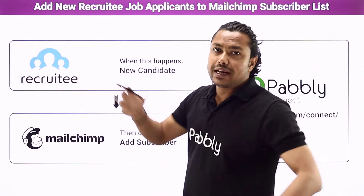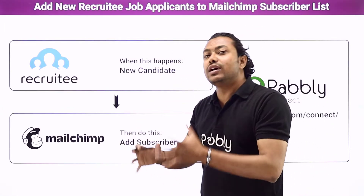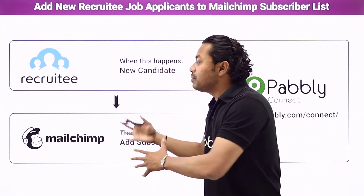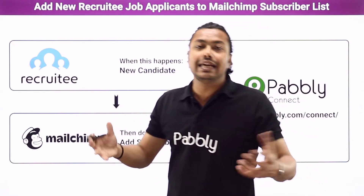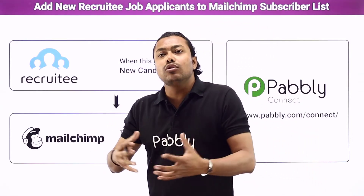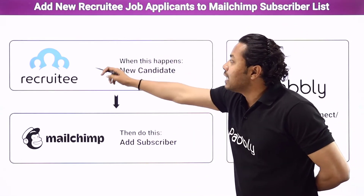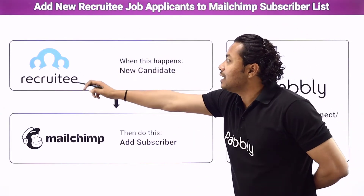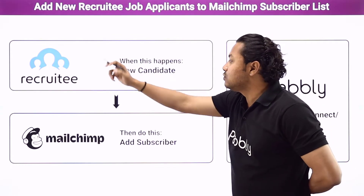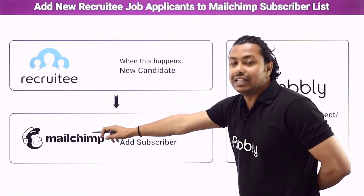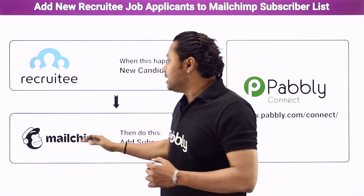Recruity is a platform where people post for jobs as well as apply for jobs, and MailChimp is a platform where people can do all-in-one marketing and send bulk emails. Whenever a new candidate applies in your Recruity account, the details of those candidates will go to your MailChimp account and a new contact will be created in MailChimp.